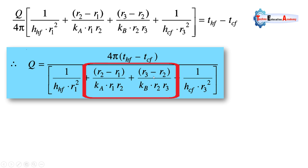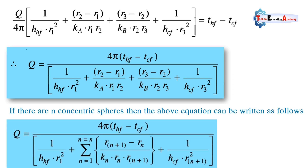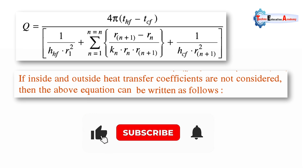If there are n concentric spheres, the above equation can be generalized. For n layers, Q equals 4π times (thf minus tcf) divided by 1/(hhf·r1²) plus a summation from n=1 to n of the individual thermal resistances. For example, if there are four layers, we calculate four separate thermal resistances and add them. If there are five layers, we calculate five separate resistances and substitute them into the equation.